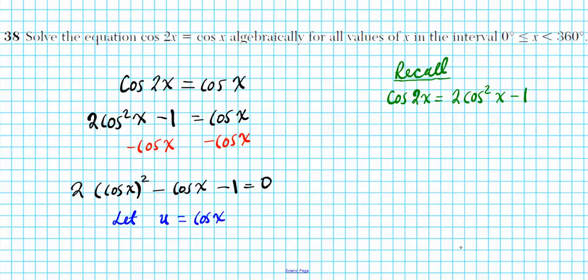So if u is cosine x, check this out, our equation becomes 2u squared minus u minus 1 equals 0. What do you think about this? This looks much better than this monstrosity here with the three components for the independent variable. So focus on this.